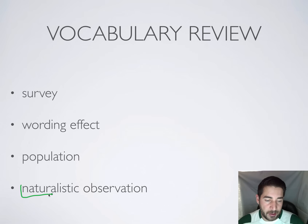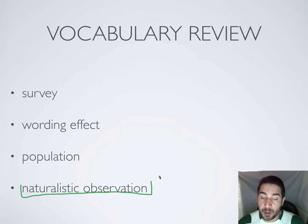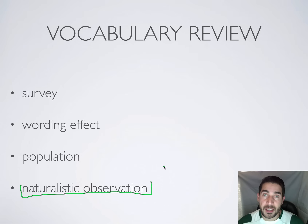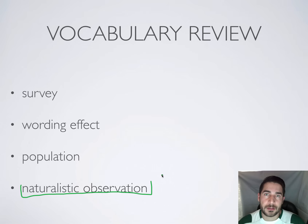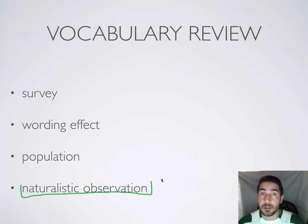That leads us to another type of research: naturalistic observation. Naturalistic observation happens when you look at somebody, a group of people, or animals in their natural environment. The key is that you don't want them to know you're watching — not in a creepy stalking way, but you want them to act as naturally as possible so you can see how they behave in certain situations, because we tend to act differently based on who's watching. For example, if there's no teacher in the room during a test, you may act differently than if the teacher is present.